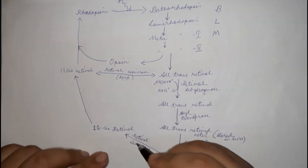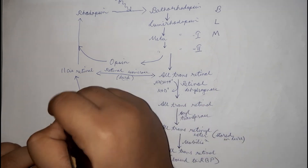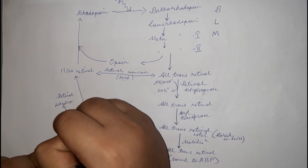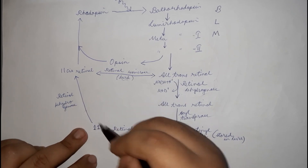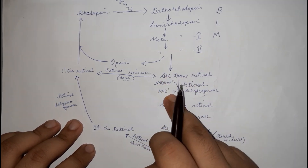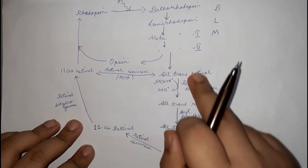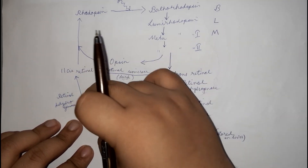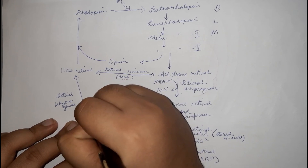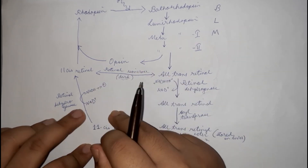The conversion of 11-cis retinol to 11-cis retinal is carried out by 11-cis retinol dehydrogenase. Since this is the reverse of a reduction — it is an oxidation — NAD⁺ is consumed and NADH + H⁺ is produced. This is a reversible reaction using the same enzyme in reverse, essentially completing the visual cycle.